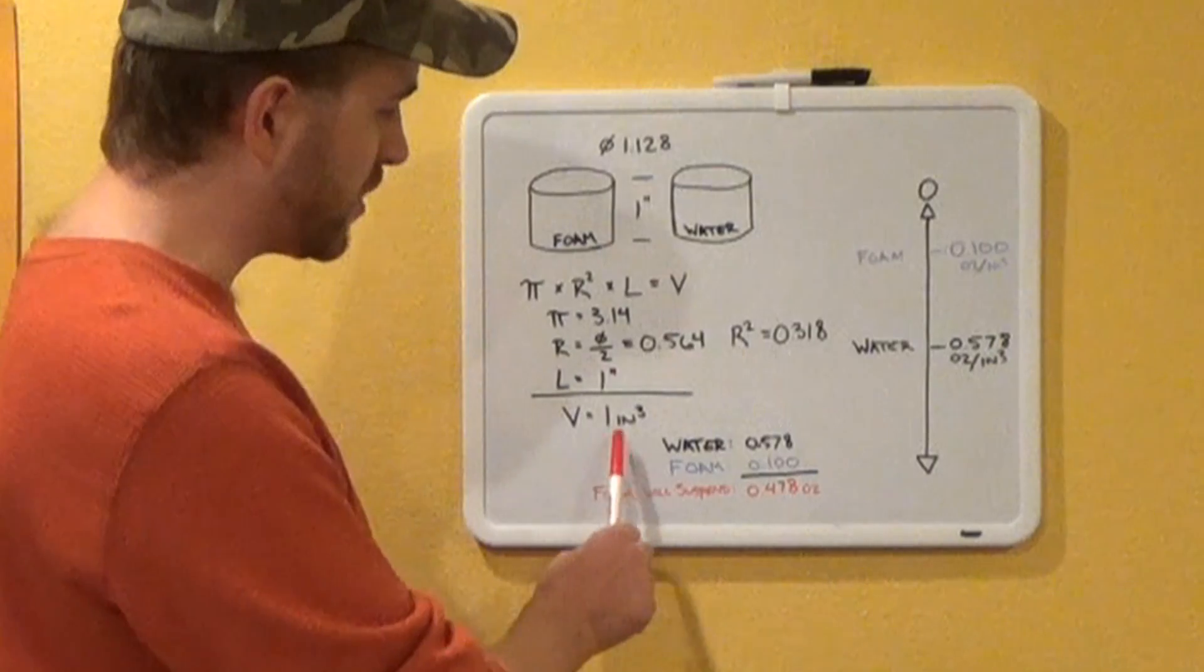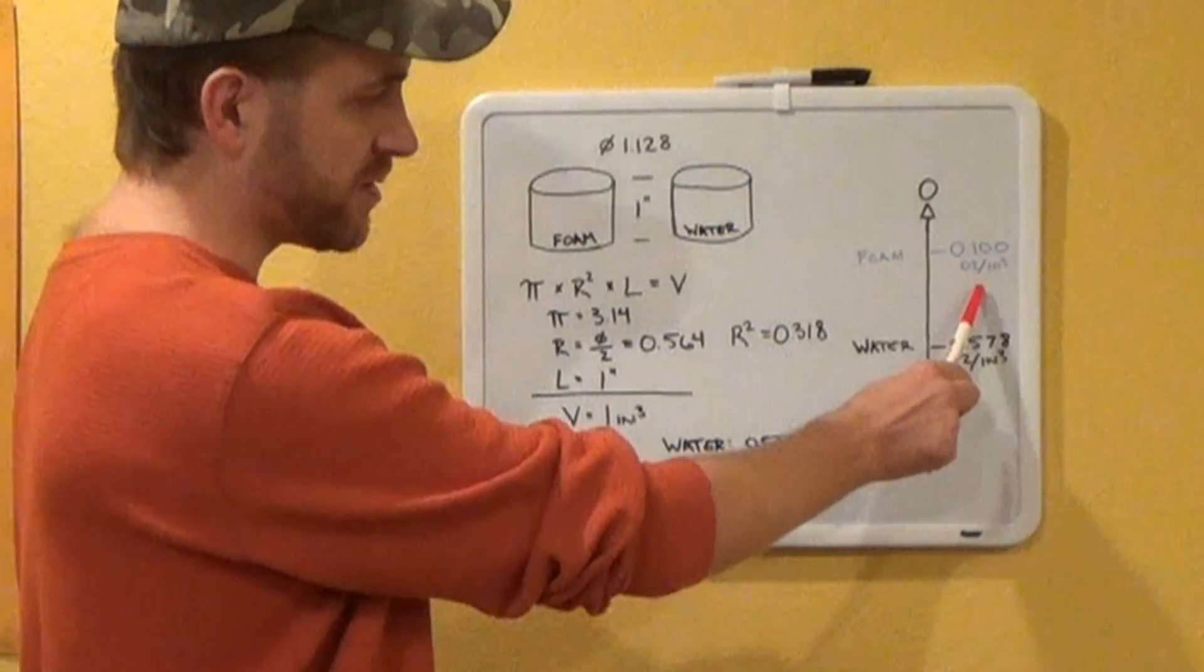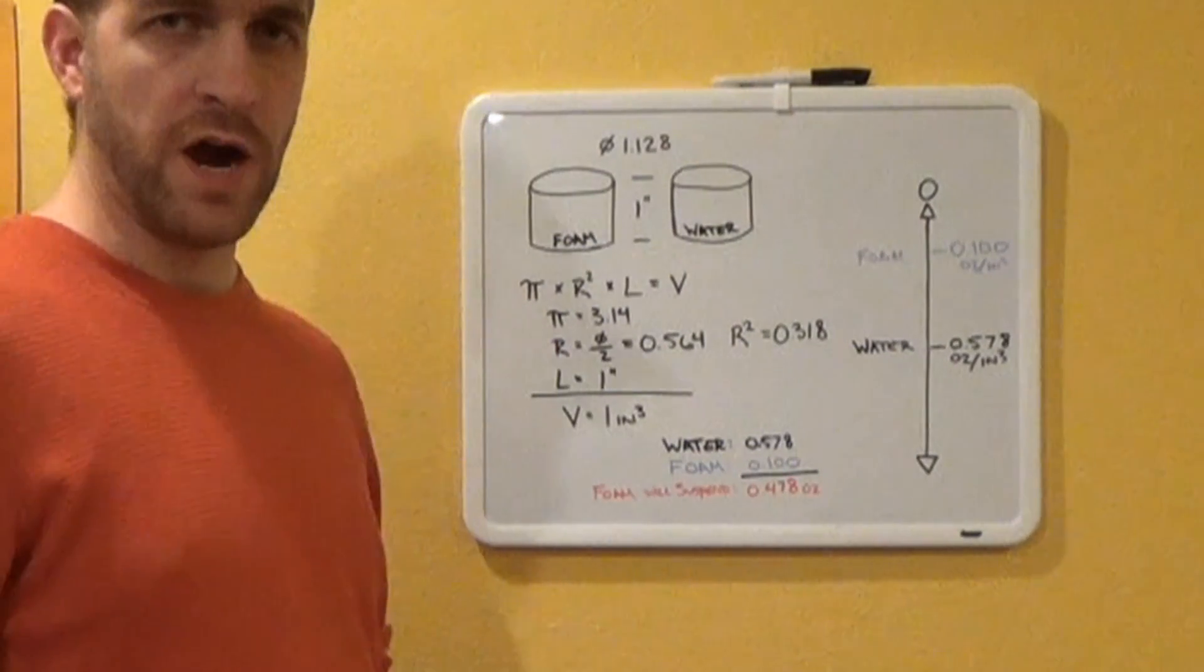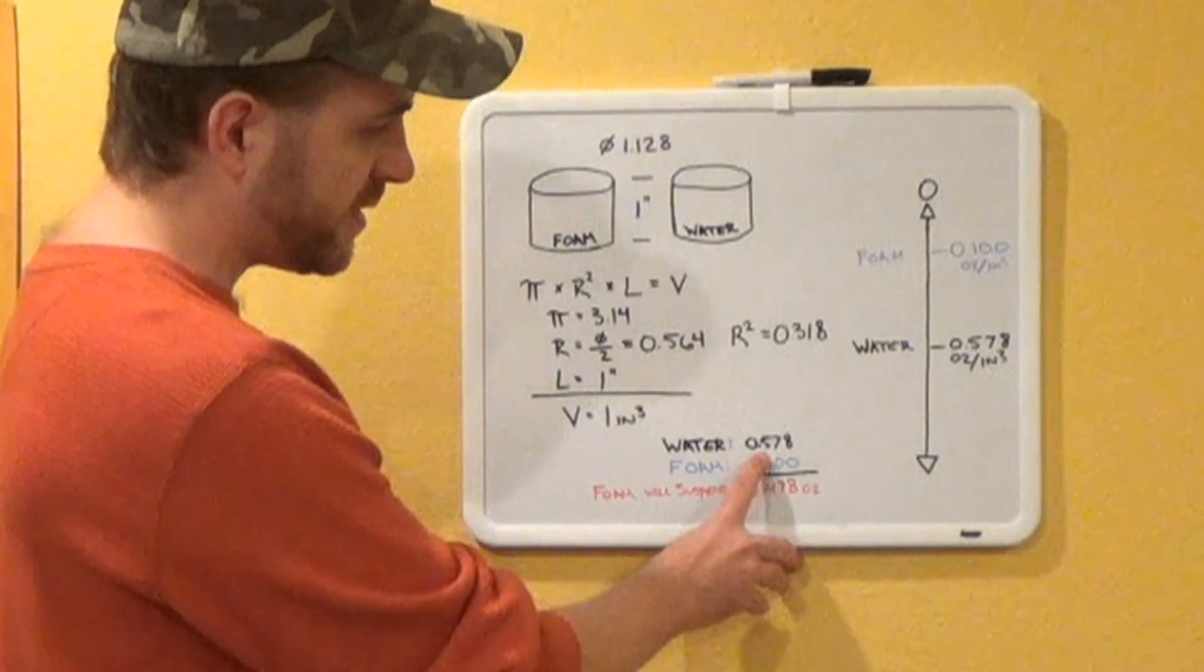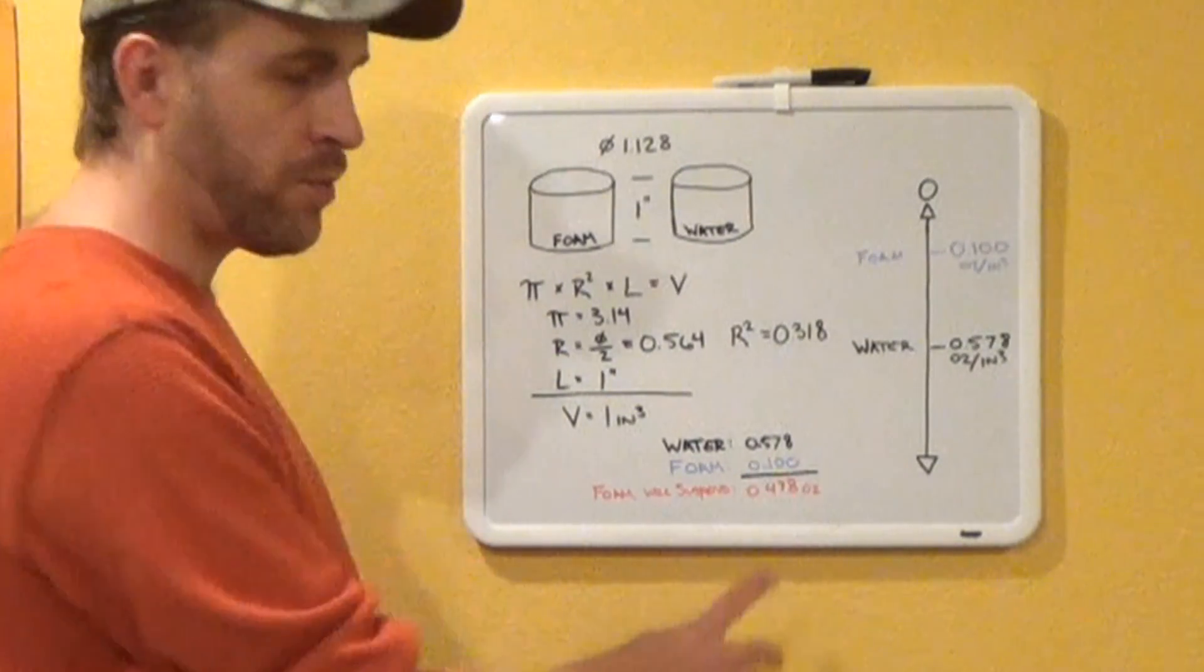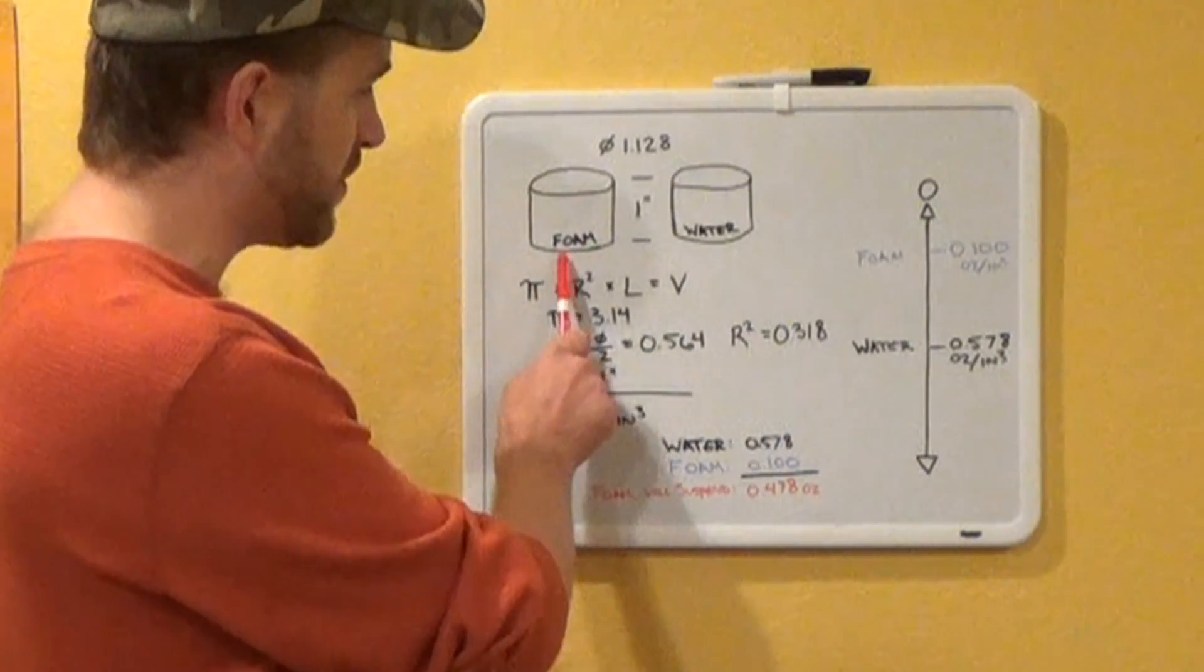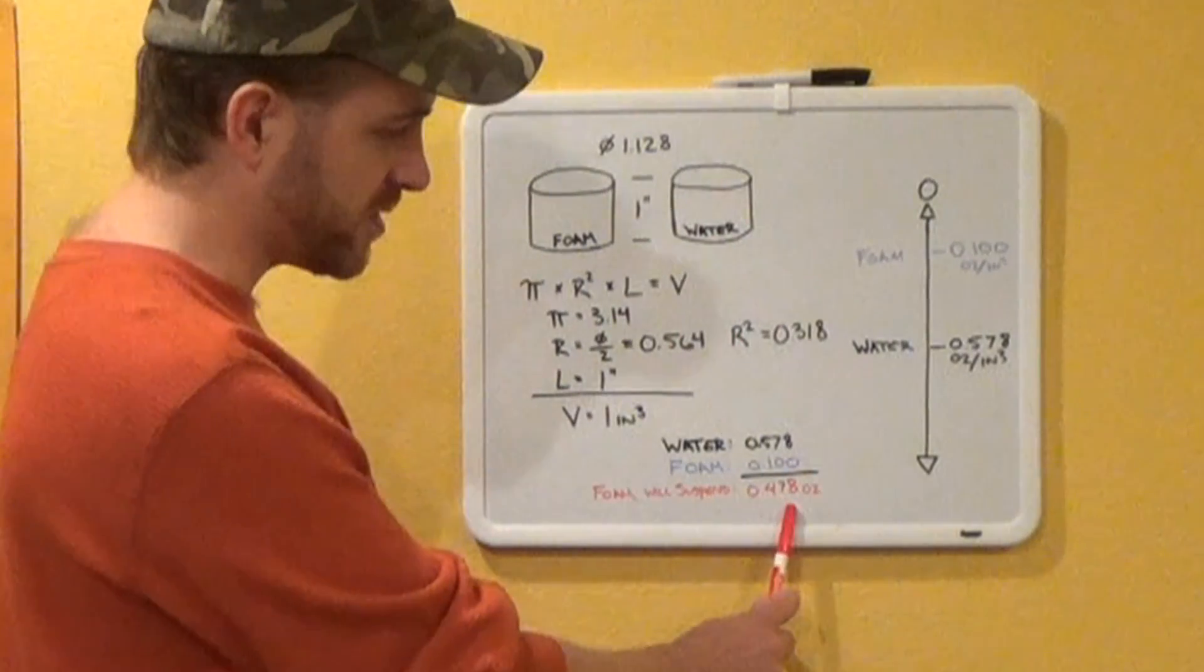So if we do our math on that once again, we get the same volume, 1 cubic inch × 0.100 and we have a total of 0.100 ounces of weight. Now if we take our water weight and subtract our foam weight, that will give us the number that this piece of foam is able to suspend in water, which is 0.478 ounces.